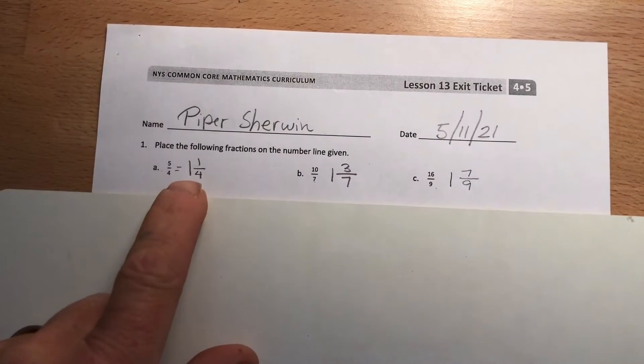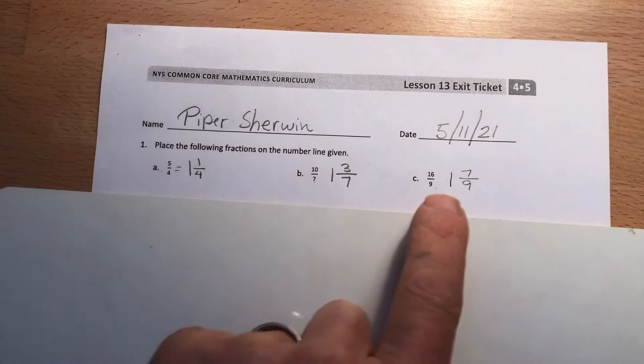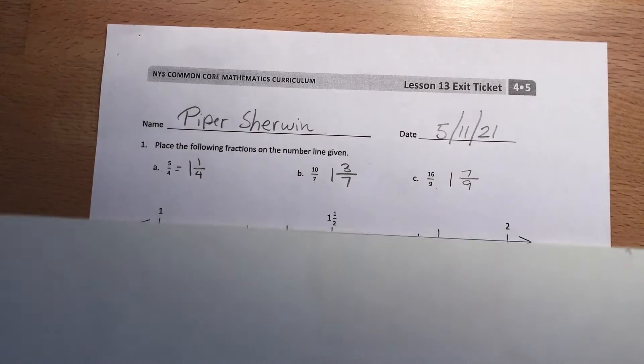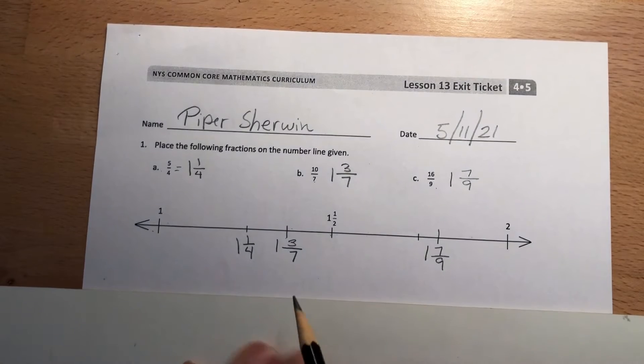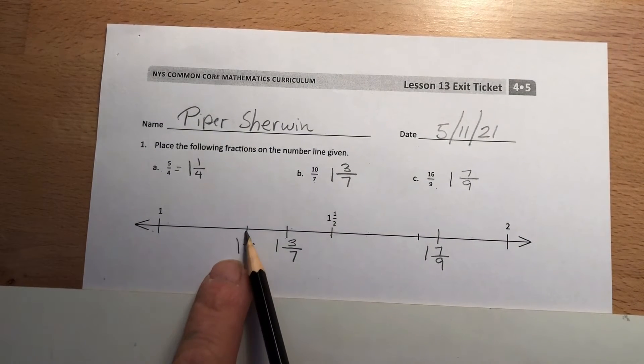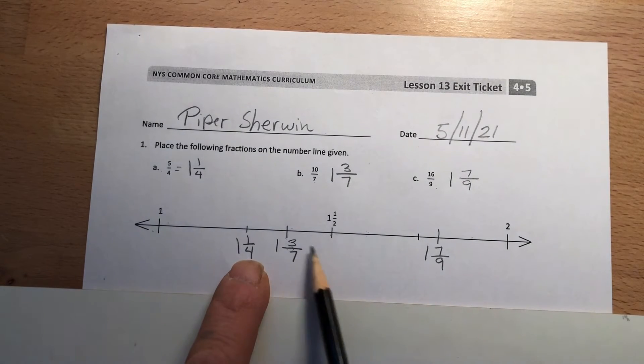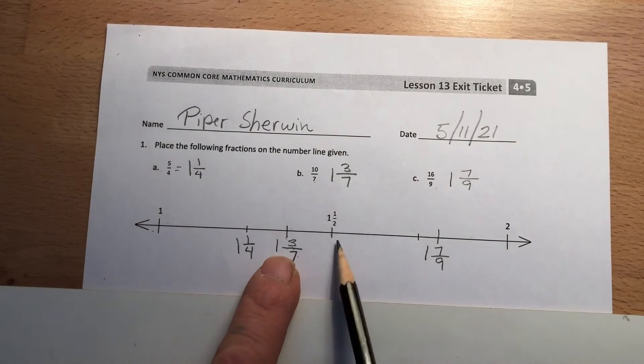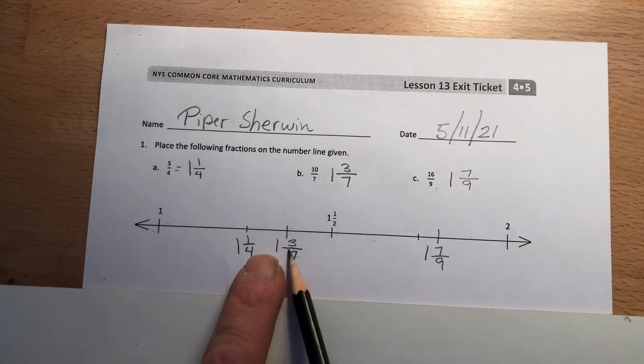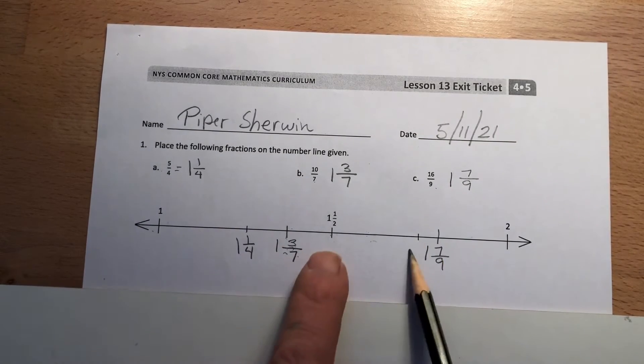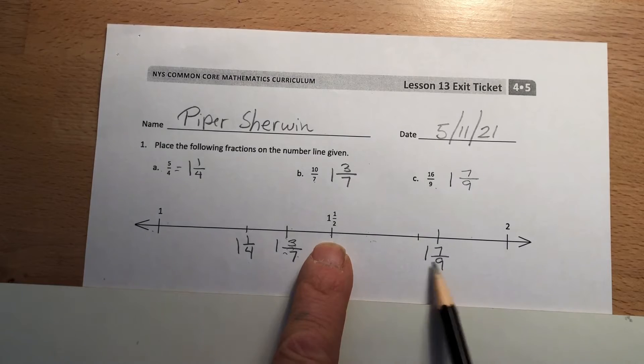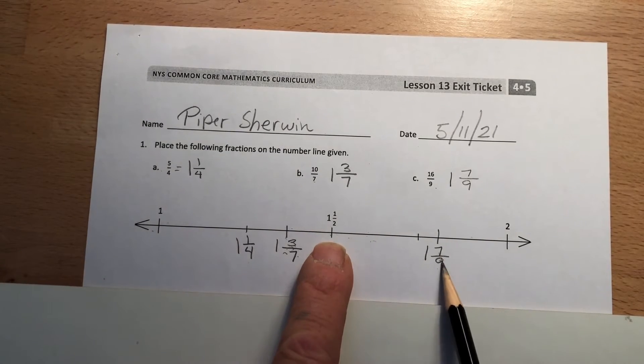All right, here we go. So place the following fractions on the line given. I converted these to one and one fourth, one and three sevenths, and then one and seven ninths. This is what I came up with: one and one fourth would end up right on this line here. One and three sevenths would be just a little bit above that, because four sevenths would be past halfway, three sevenths is under halfway. And then one and seven ninths, I know this is closer to two because it's seven ninths, so it's up here somewhere.